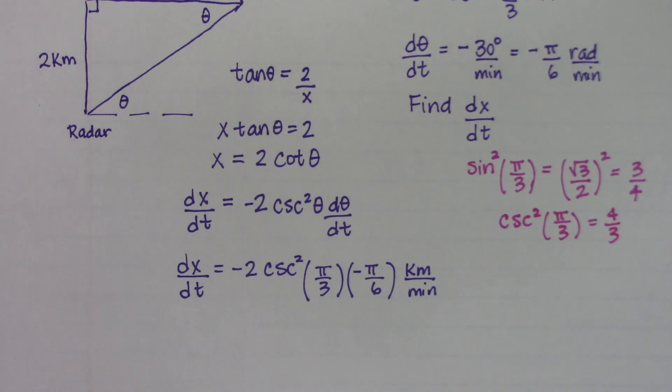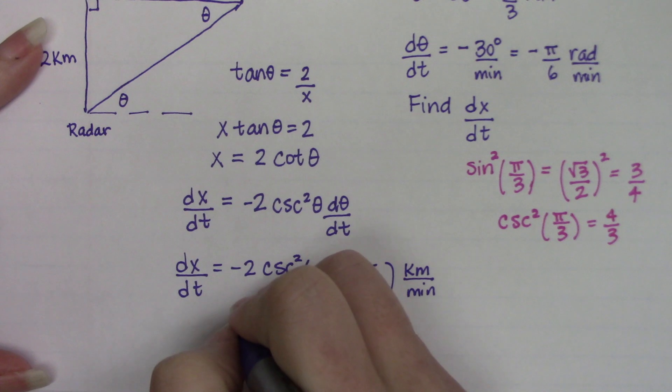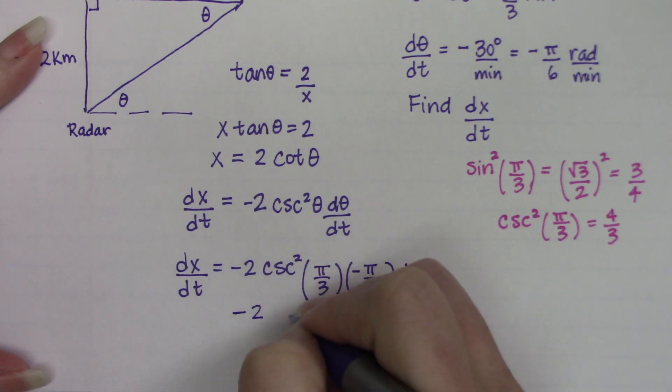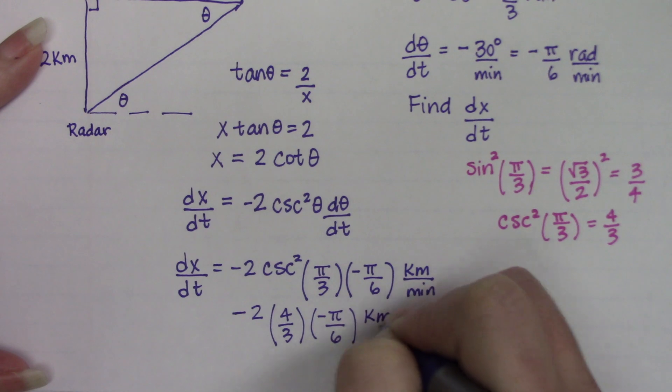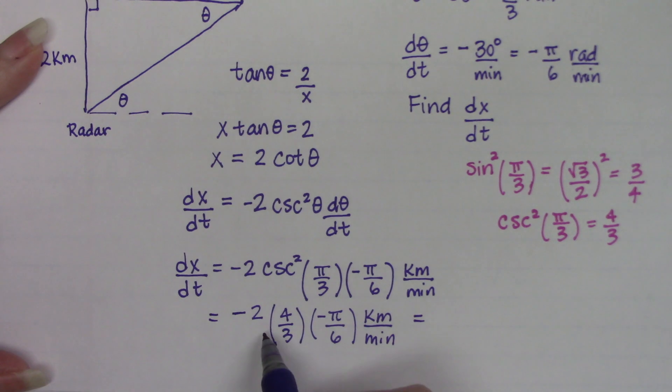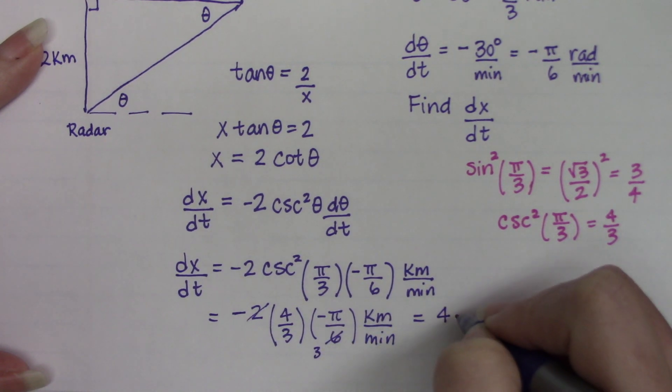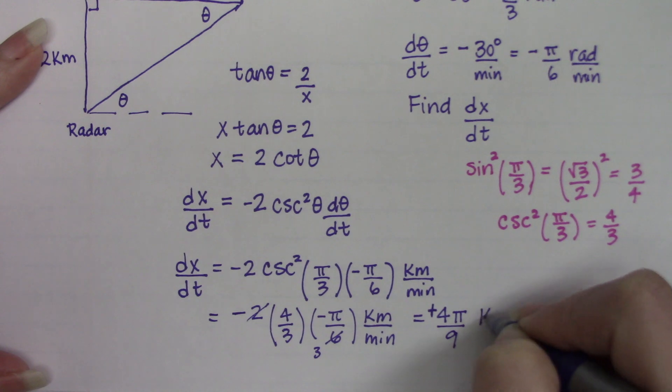Now I'm going to come down here and say negative 2 times 4 thirds times negative pi over 6 kilometers per minute. 2 cancels with a 2 in here and we get a 3. The negative times the negative cancels, so this is positive. 4 pi over 9 kilometers per minute.